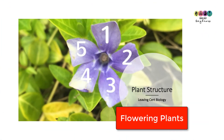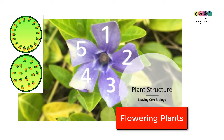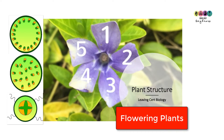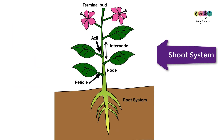This video is all about the structure of flowering plants. We're particularly concerned with the internal structure of the stem and also the internal structure of the root. A flowering plant is made up of a shoot system above the soil and a root system below the soil.